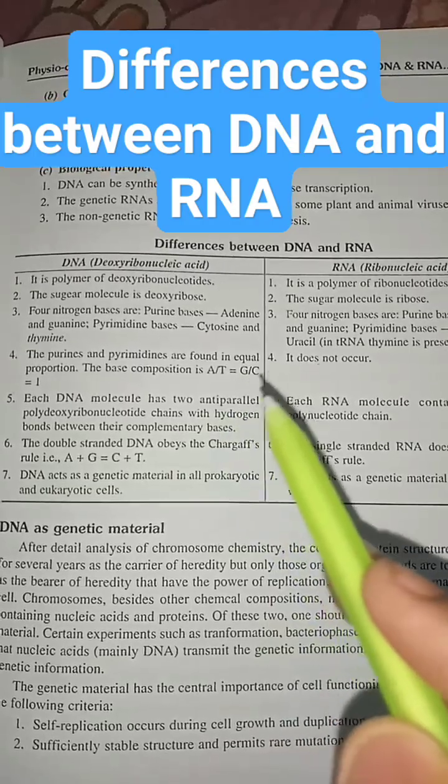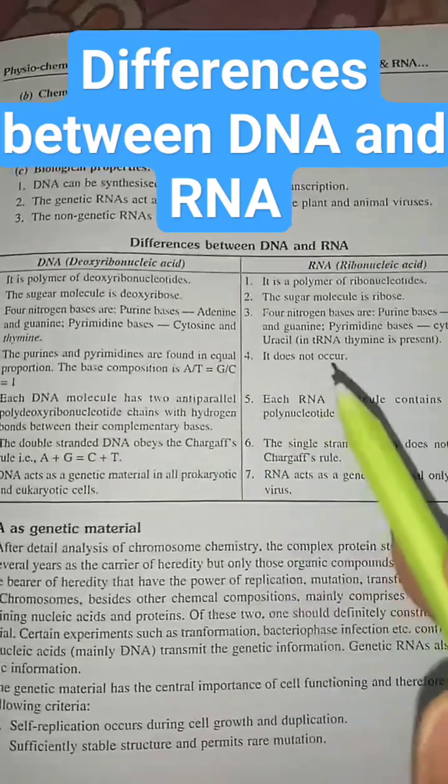The base composition is A by T equals G by C equals 1. It does not occur in RNA.